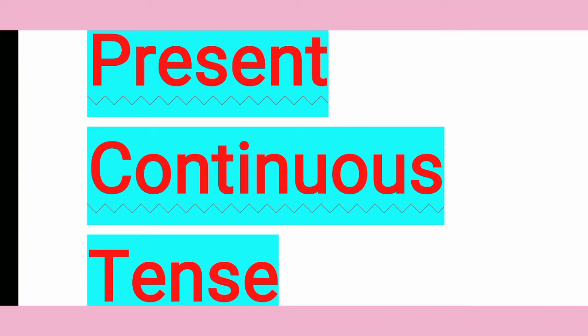Next, we can use present continuous tense to express an action definitely planned for the near future. Like we are making a plan for the future. For example: I am meeting my friend tomorrow. We are buying a new car soon. This is all about our planning for the near future.